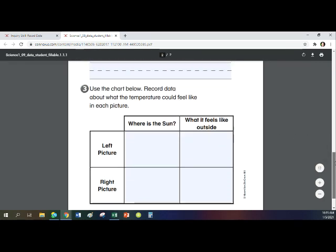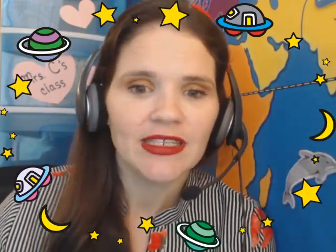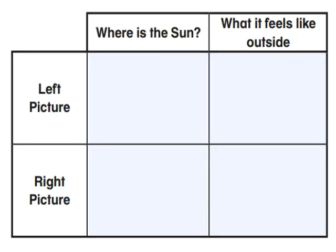Number three says use the chart below. Record data about what the temperature could feel like in each picture. So that's how hot, cold, cool, warm. That's just what it feels like outside at different times of the day. So let's look at that chart together and let's draw some pictures and write some words to tell where the sun is and what it feels like outside.